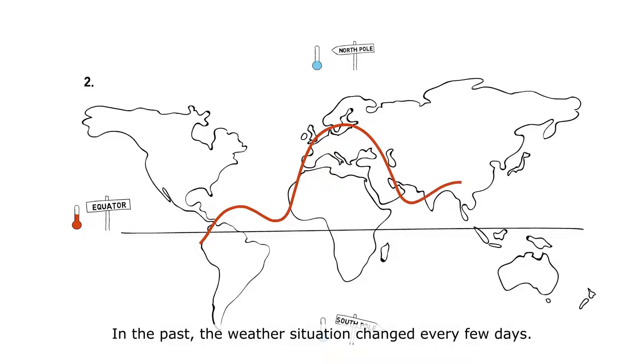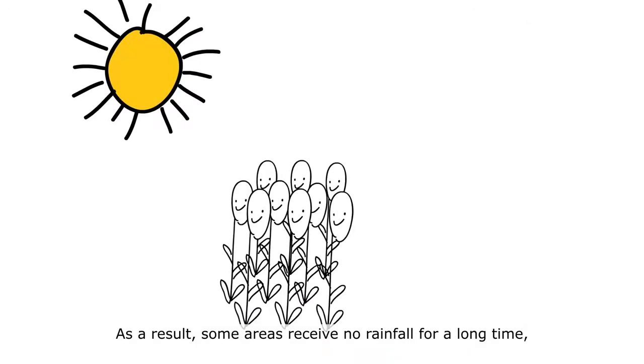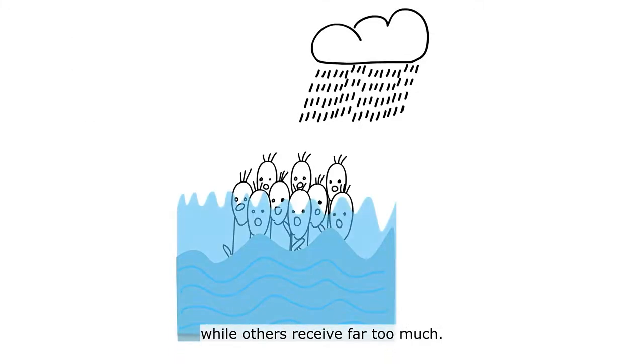In the past, the weather situation changed every few days. Today, it can remain in one place for several weeks. As a result, some areas receive no rainfall for a long time, while others receive far too much.